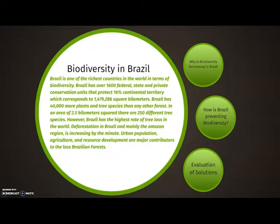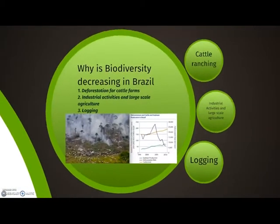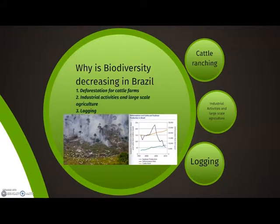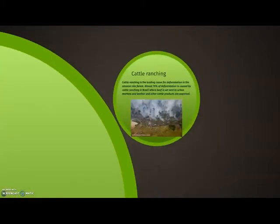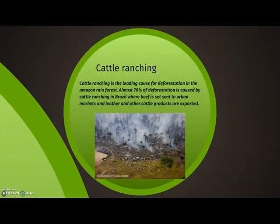So why is biodiversity decreasing in Brazil? Deforestation for cattle farms, industrial activities, large-scale agriculture, and logging are key causes. Cattle ranching is a leading cause of deforestation in the Amazon rainforest. Almost 70% of deforestation is caused by cattle ranching in Brazil, where beef is sent to urban markets and leather and other cattle products are exported.